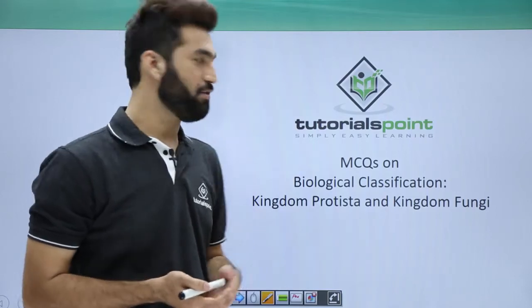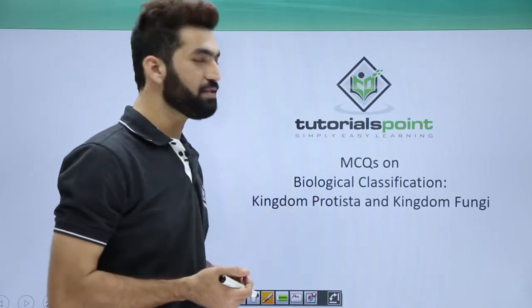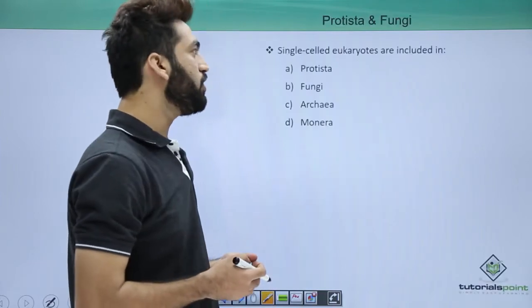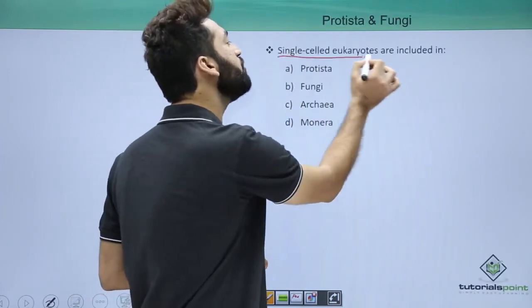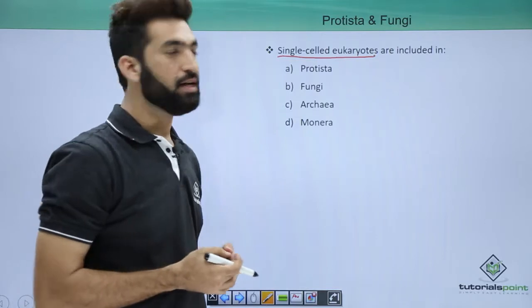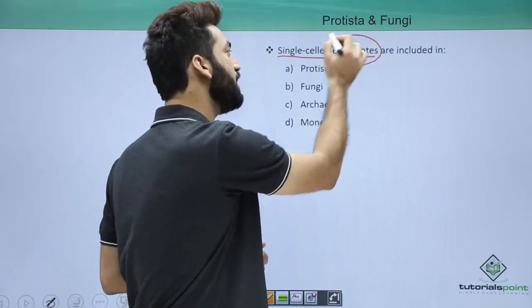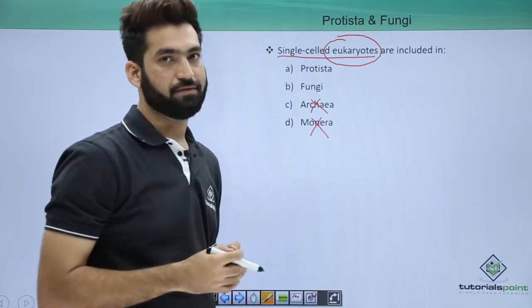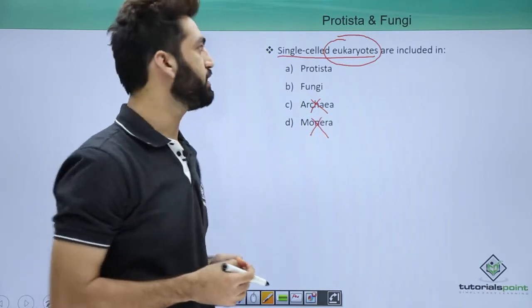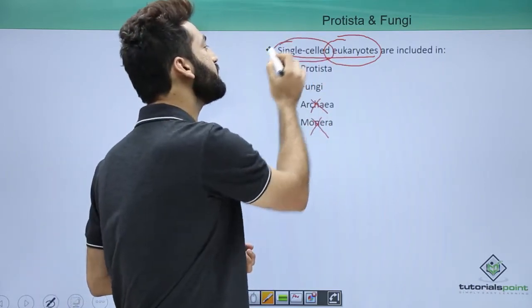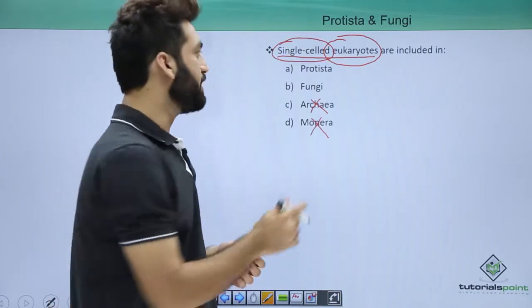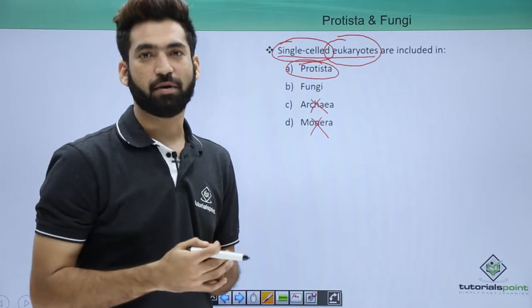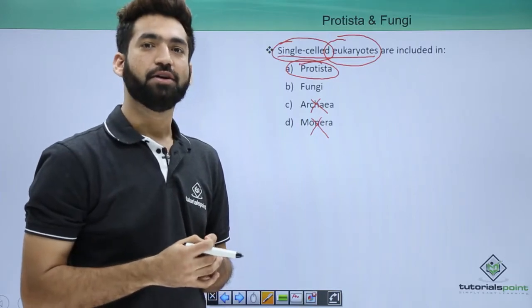In this session I will be discussing some questions from Kingdom Protista and Kingdom Fungi. The first question is: single-cell eukaryotes are included in which kingdom? Archaea and Monera are left out because they are members of prokaryotes. The answer is Kingdom Protista — remember, Protista is the kingdom of all single-cell eukaryotes.